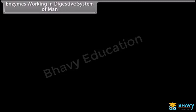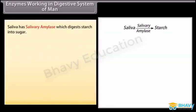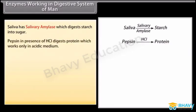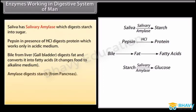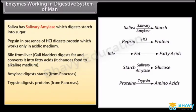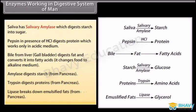Enzymes working in the digestive system of man: Saliva has salivary amylase which digests starch into sugar. Pepsin in the presence of HCl digests protein and works only in acidic medium. Bile from the liver and gallbladder digests fat and converts it into fatty acids, changing food to an alkaline medium. Amylase from the pancreas digests starch. Trypsin from the pancreas digests proteins. Lipase from the pancreas breaks down emulsified fats.